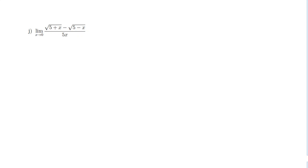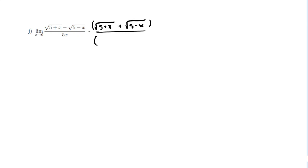For problem 1j, we again want to evaluate a limit as x approaches 0. We can't evaluate directly by substituting x = 0 because the expression is undefined there. With radical expressions like what we have in the numerator, we can manipulate this by multiplying the numerator and denominator by the conjugate — specifically, by √(5+x) + √(5−x).